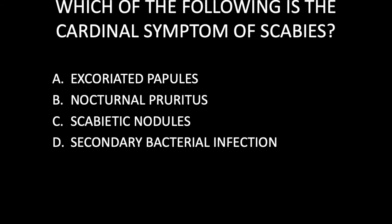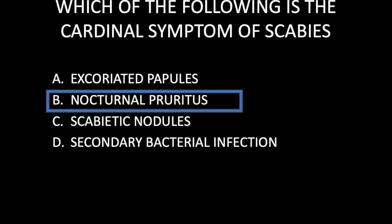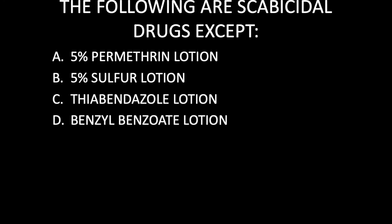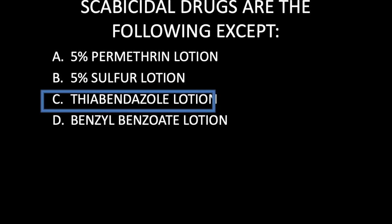For self-assessment, here are three questions. First: which of the following is the cardinal symptom of scabies — excoriated papules, nocturnal pruritus, scabetic nodules, or secondary bacterial infection? Although all are found in scabies, the cardinal symptom is nocturnal pruritus. Second: which of the following is NOT a scabicidal drug — 5% permethrin lotion, 5% sulfur lotion, thiabendazole lotion, or benzylbenzoate lotion? The answer is thiabendazole lotion, because this drug is used for cutaneous larva migrans, while the others are drugs for scabies.